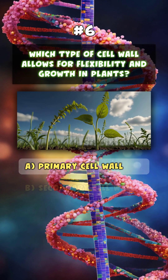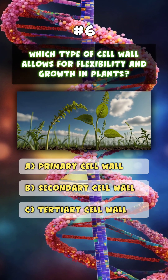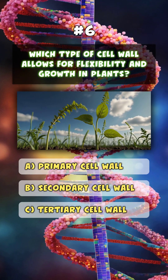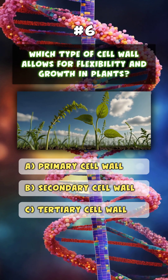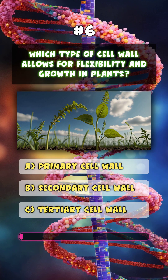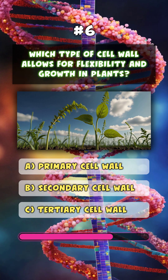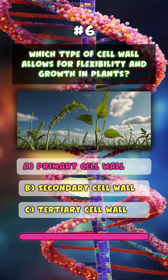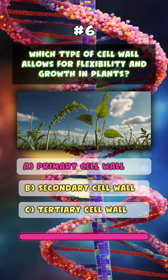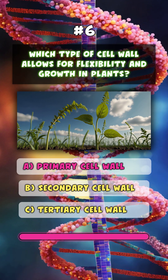Which type of cell wall allows for flexibility and growth in plants? A. Primary cell wall.